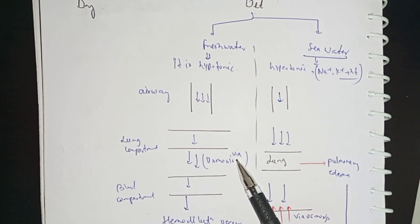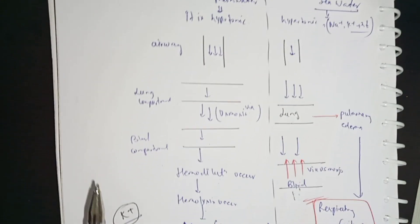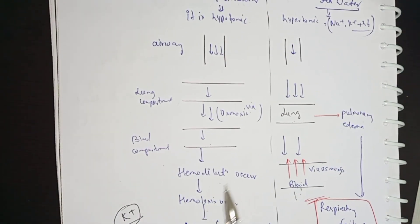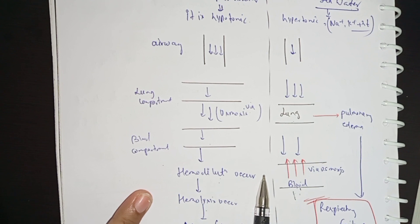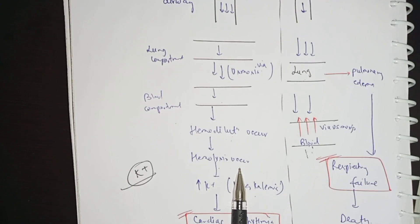Osmosis is simply the movement of water from high to low concentration across the semi-permeable membrane. So when the blood starts to flow, the blood will become a hemodilution condition. When hemodilution happens, it will become hemolysis - that is RBC destruction.